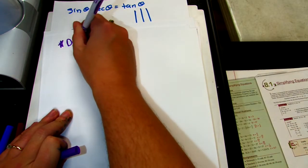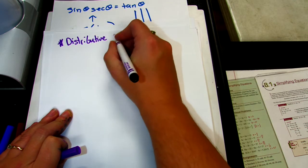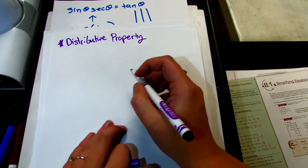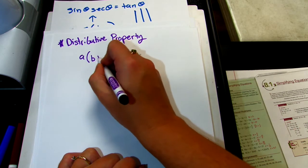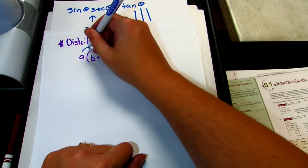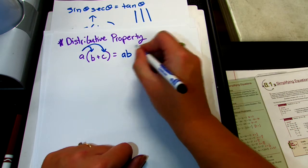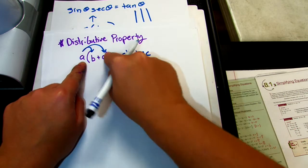We're now going to talk about the distributive property and how that helps us simplify equations. The distributive property says: if you have a times the quantity b plus c, that a is being distributed through multiplication over addition. So it's a times b plus a times c — it's being distributed to every term on the inside.